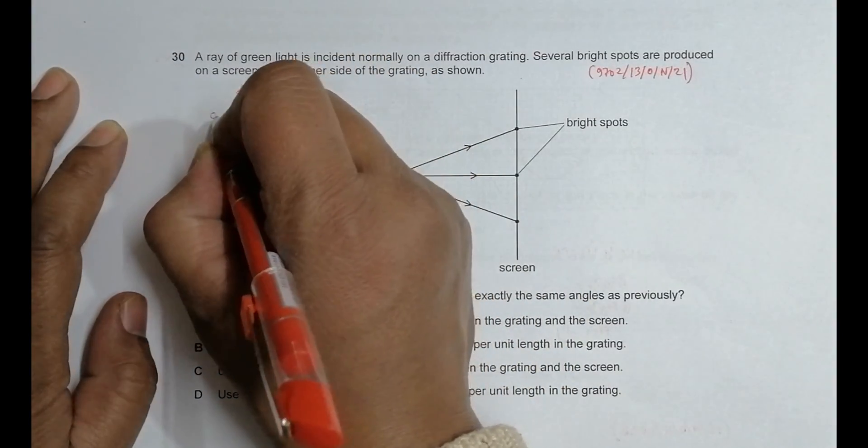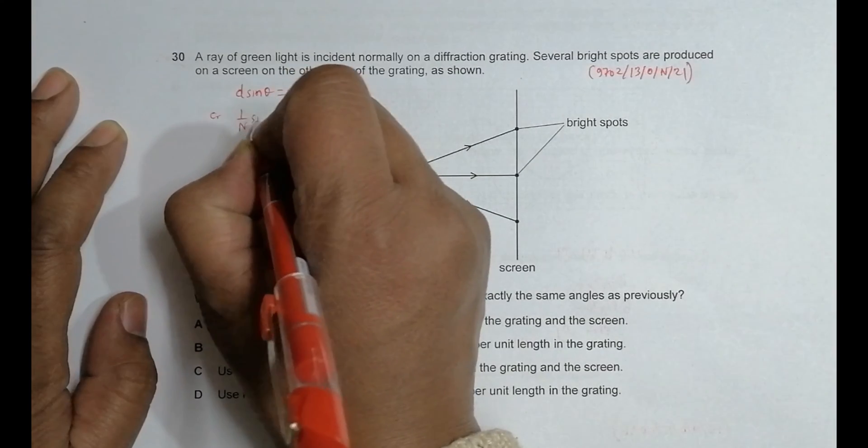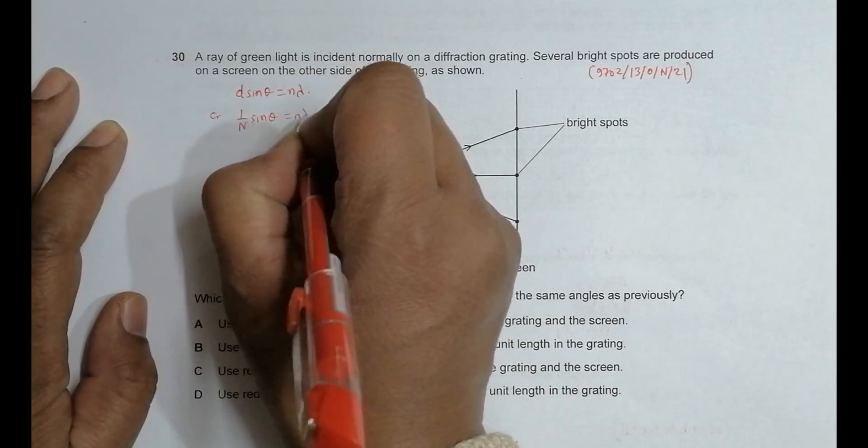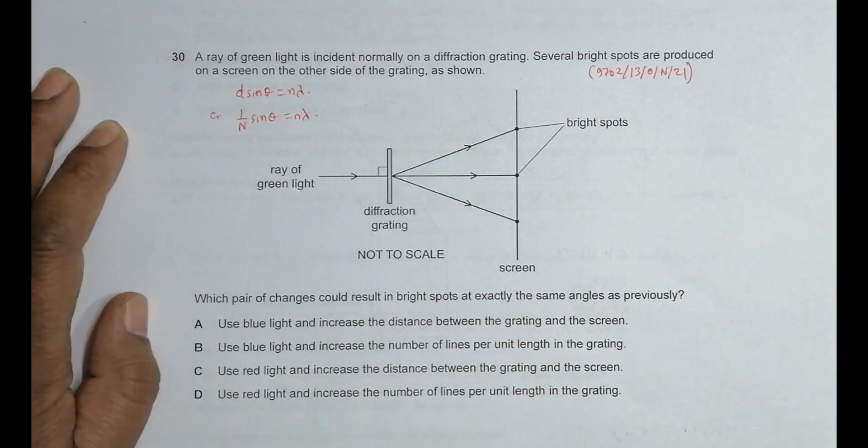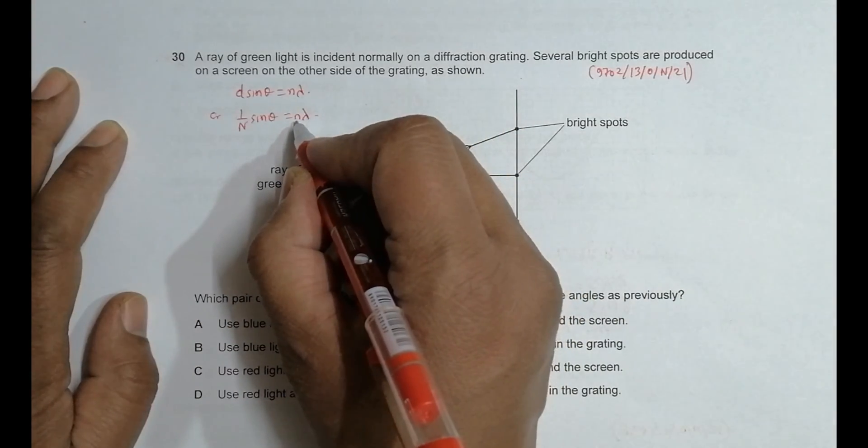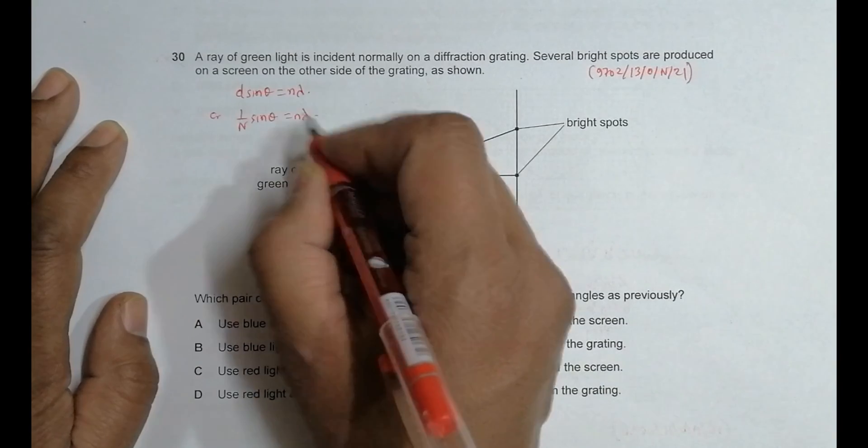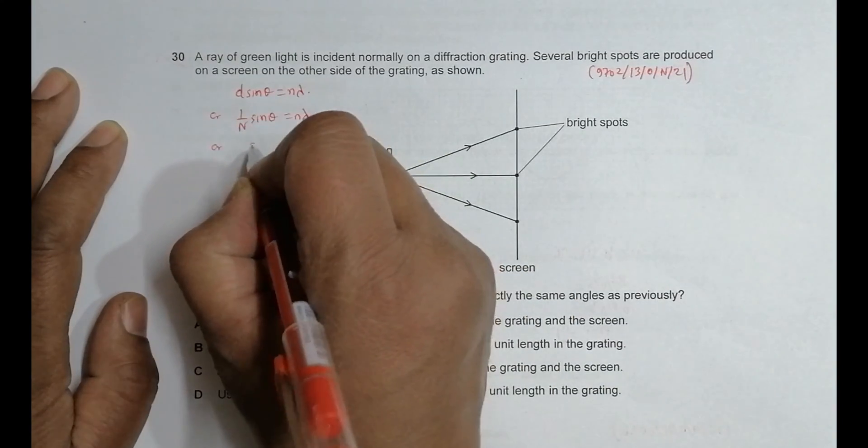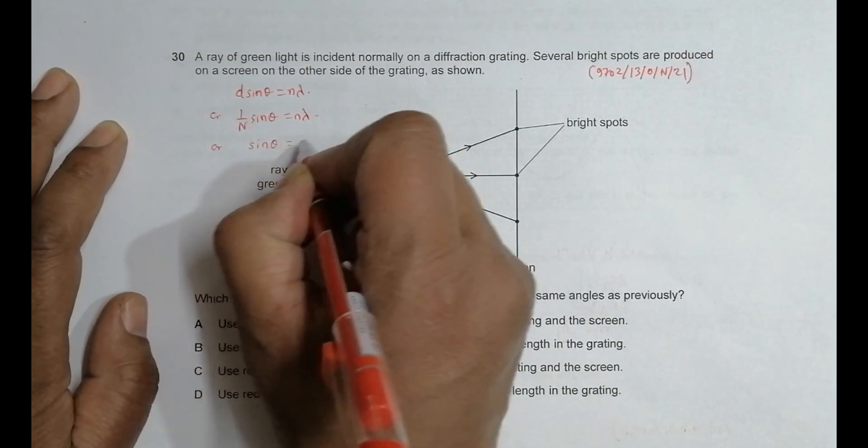And this d is equal to 1 by n, where n is the number of lines per unit length, number of grating lines per unit length. It is the order of the bright spot. Lambda is the wavelength which gives us sine of theta is equal to n times lambda.